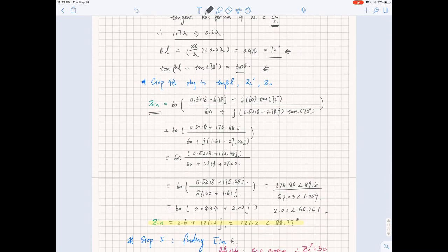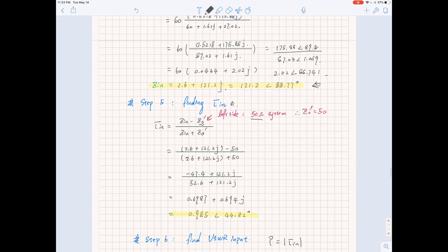You can pause the video if you want to take a look at the calculation process. This is the result that we will get. After we have Zin, we can also find out what the input reflection is. One thing that is really important is that Z0 here I call it Z0 prime because this is the input impedance.